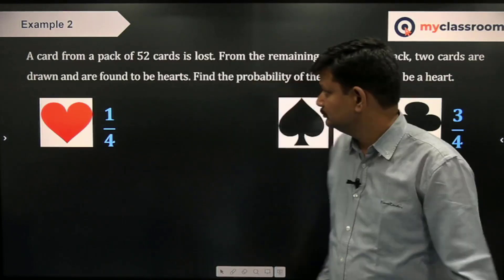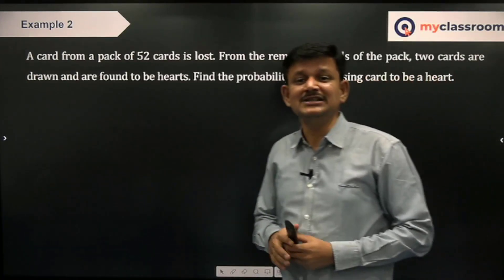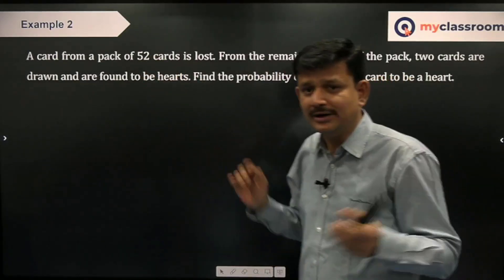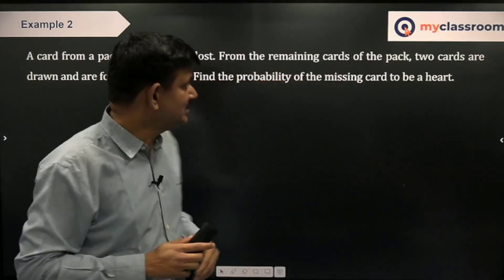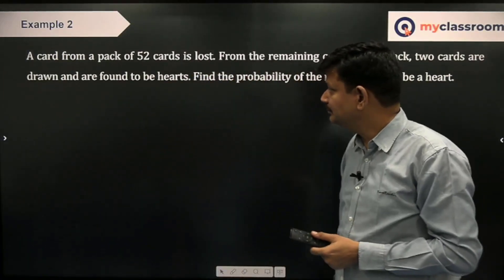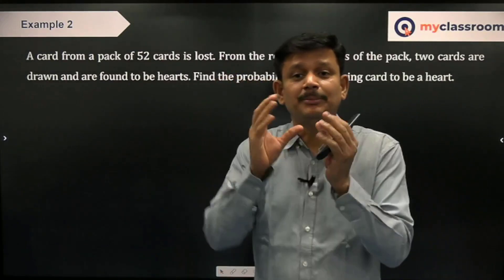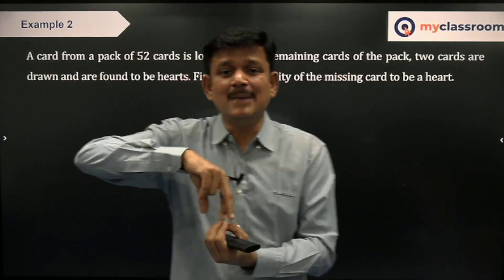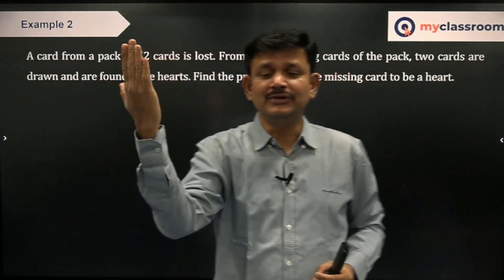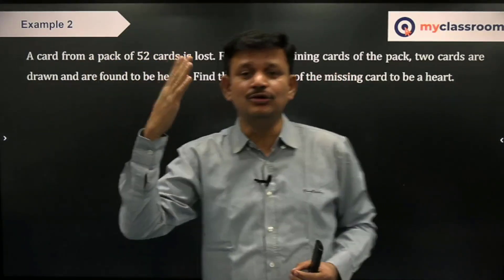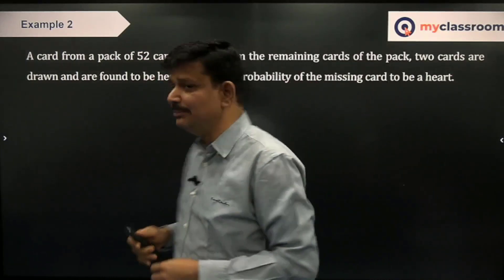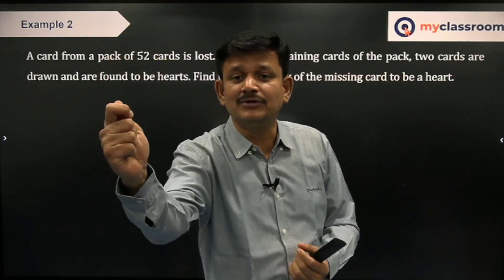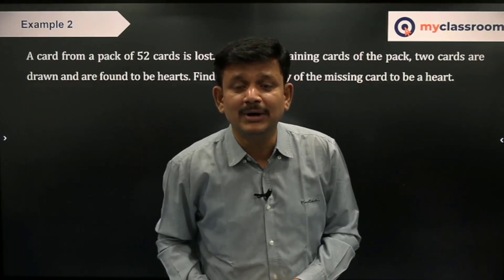Let us look at the next question. A card from a pack of 52 cards is lost. From the remaining 51 cards, two cards are selected at random and both of them are found to be hearts. So from a pack of 52 cards, a card is lost — you are left with 51 cards, you do not know which card is lost. From these 51 cards, you take two cards and find that both are hearts. The final outcome that these two cards are hearts is already known to me. Now I have to find the probability of the missing card being a heart.